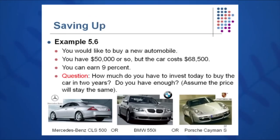Here's another good example of the use of this lump sum present value equation. If you want to buy a new automobile, you have $50,000 saved up. The car costs $68,500 and you can earn 9% on your money. How much do you have to invest today — keyword being today — to buy the car in two years? Do you have enough money saved up?